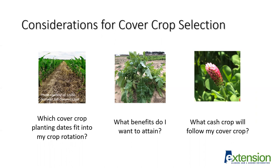One of the most important considerations is: what benefits am I trying to achieve? I have a picture of a brassica here. Brassicas have a deep tap root which can go and scavenge for nutrients deeper in the soil profile and bring them up. Certain brassicas also have the ability to suppress plant parasitic nematodes specifically. So these are some of the considerations — what are you trying to achieve with a cover crop?